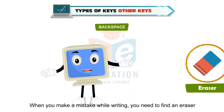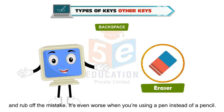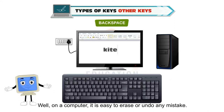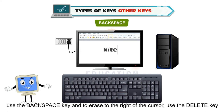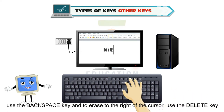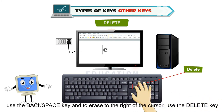When you make a mistake while writing, on a computer it is easy to erase or undo any mistake. When you want to erase the typed letter, number or symbol to the left of the cursor, use the Backspace key. And to erase to the right of the cursor, use the Delete key.